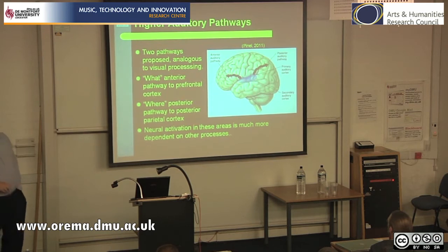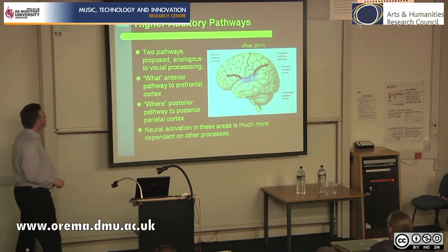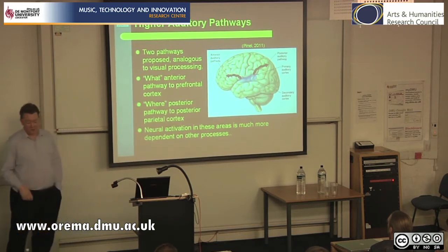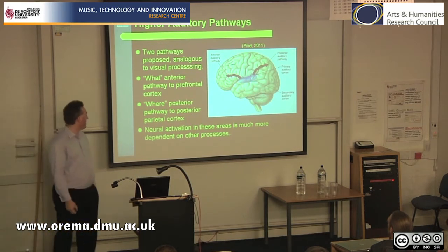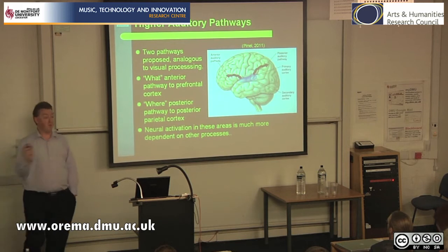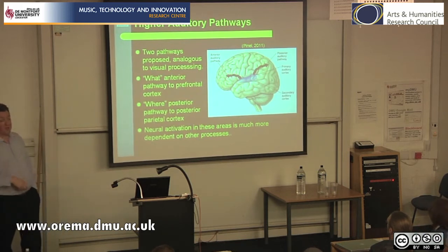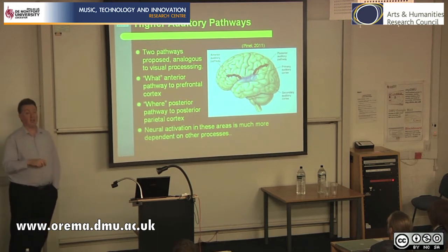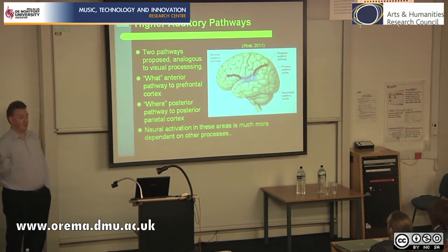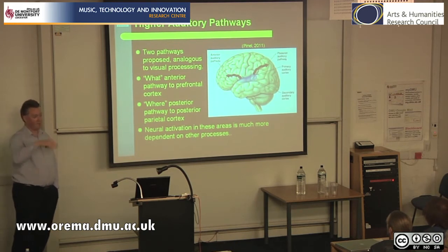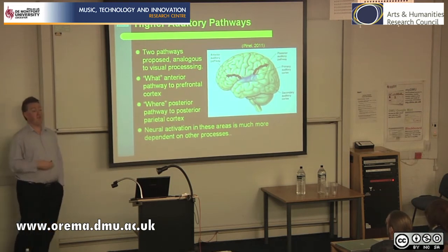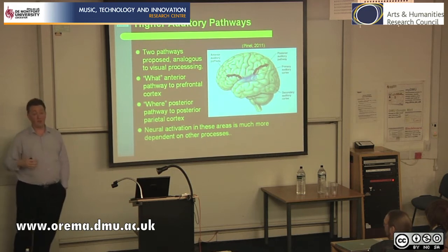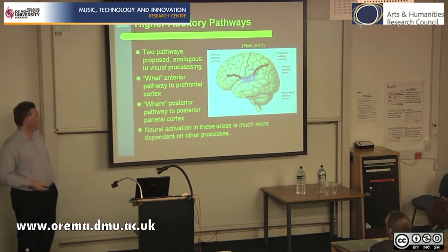In addition, it has been proposed — and we're in the realm of wild speculation — that there are two higher cortical pathways coming out of the primary auditory cortex, analogous to visual processing: a 'what' pathway to the prefrontal cortex, and a 'where' pathway to the posterior parietal cortex. In the ascending auditory pathway you can already accomplish this, but here you benefit from high-level semantic knowledge. However, neural activation in these higher areas is much more dependent on other processes, so if you present the same sounds multiple times, you're likely to get different responses each time.